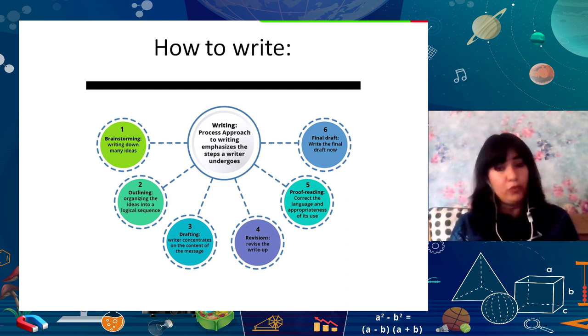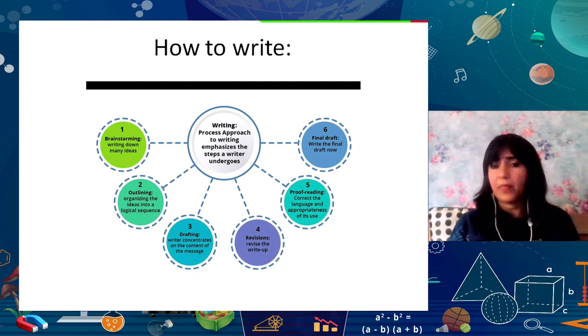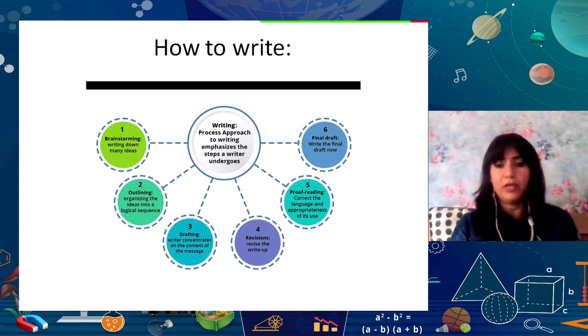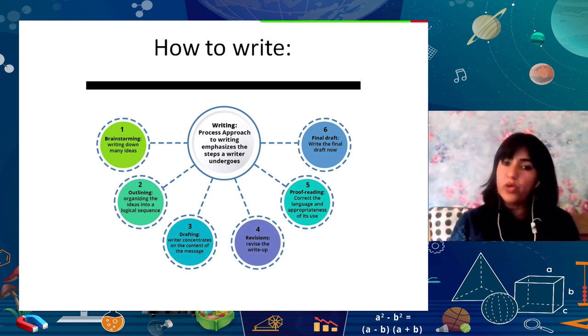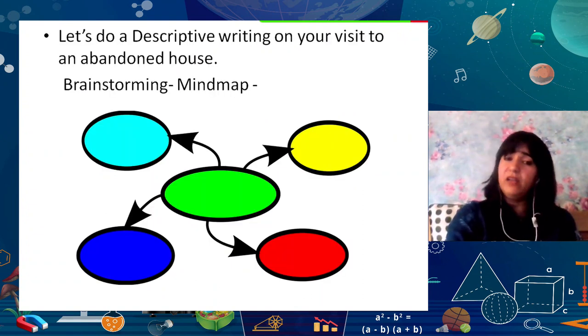After drafting, there will be a revision of the write-up. After revising, there will be proofreading — to correct language, fix pronunciation mistakes, check if stronger adjectives or words could be used, and ensure appropriateness. Proofreading can be done by your elbow partner or you can ask your teacher to do it. Then comes the final draft, where you rewrite it and present it to your teacher. This is what the process approach is, and it actually helps you become a better writer.